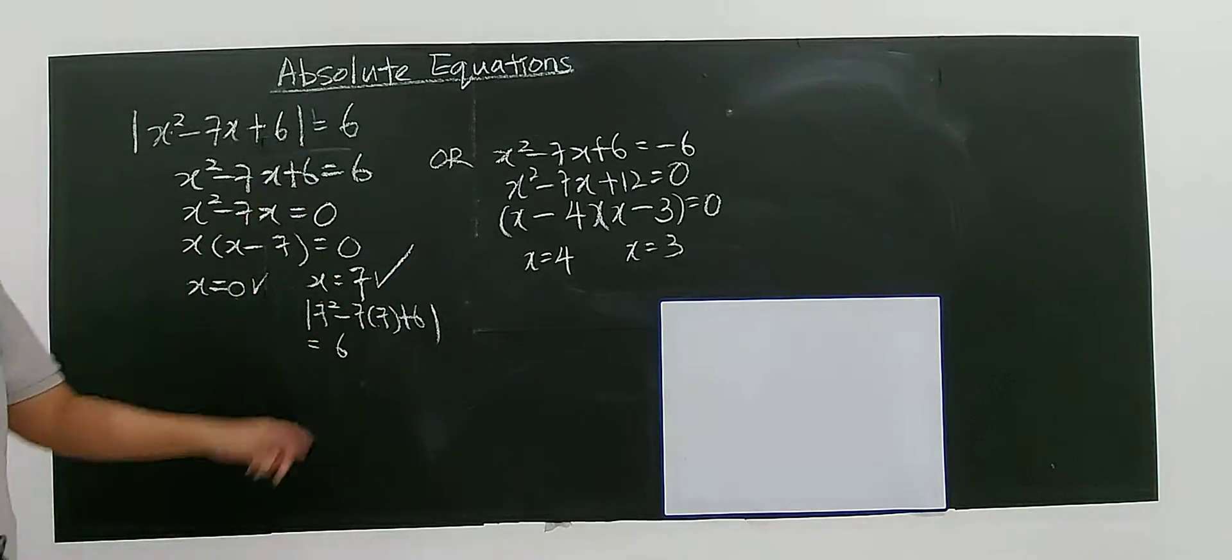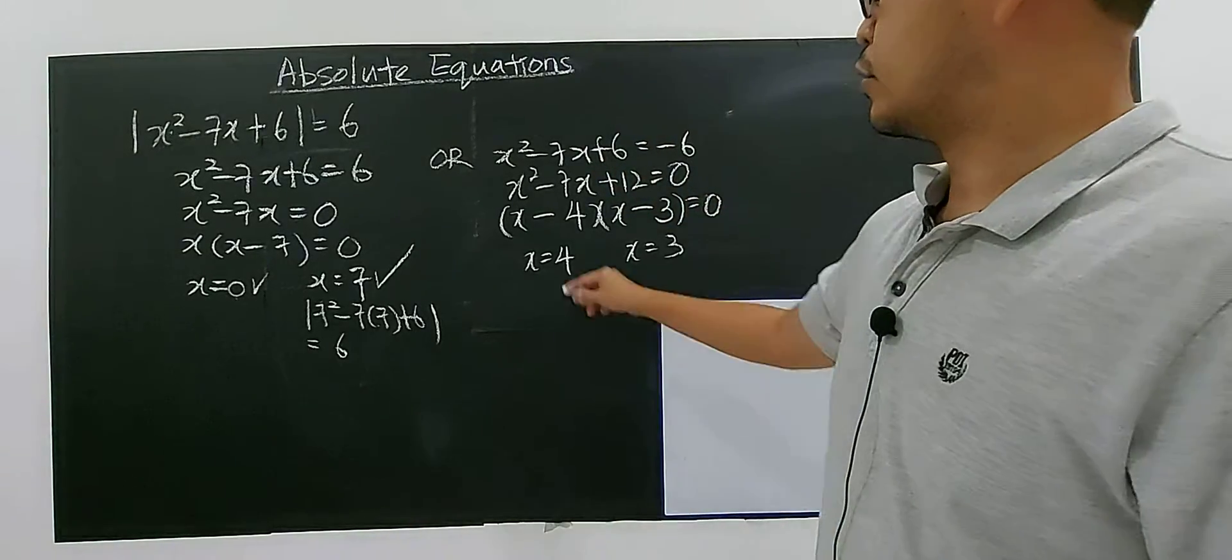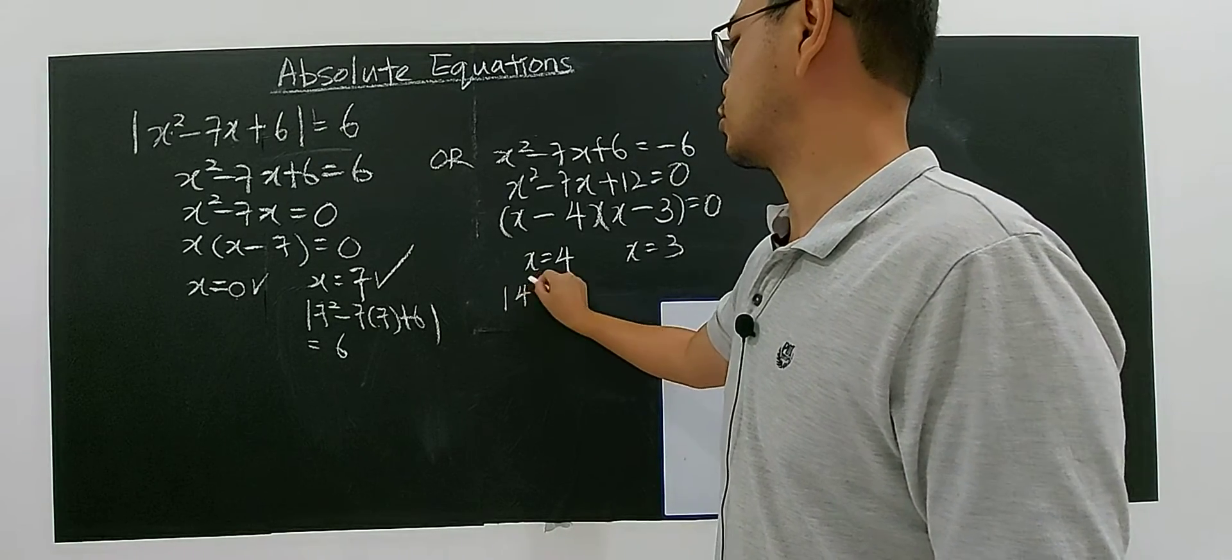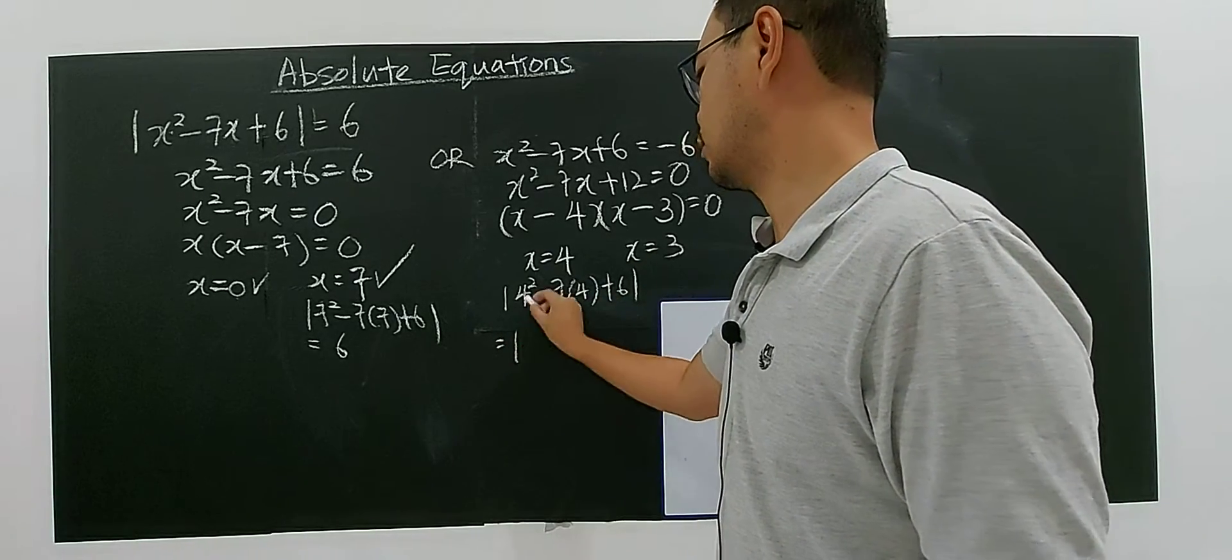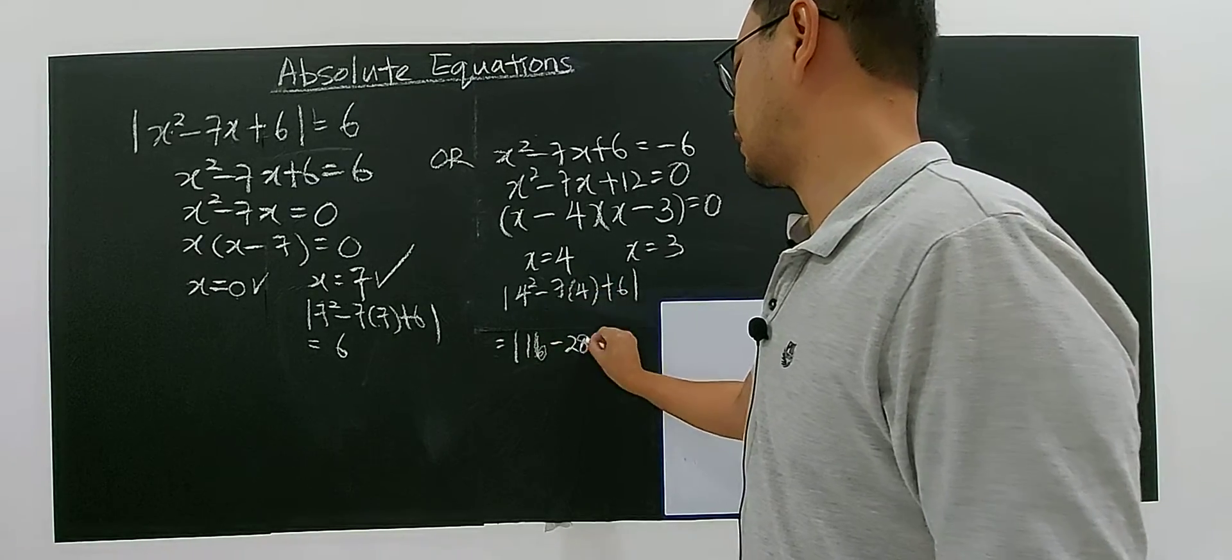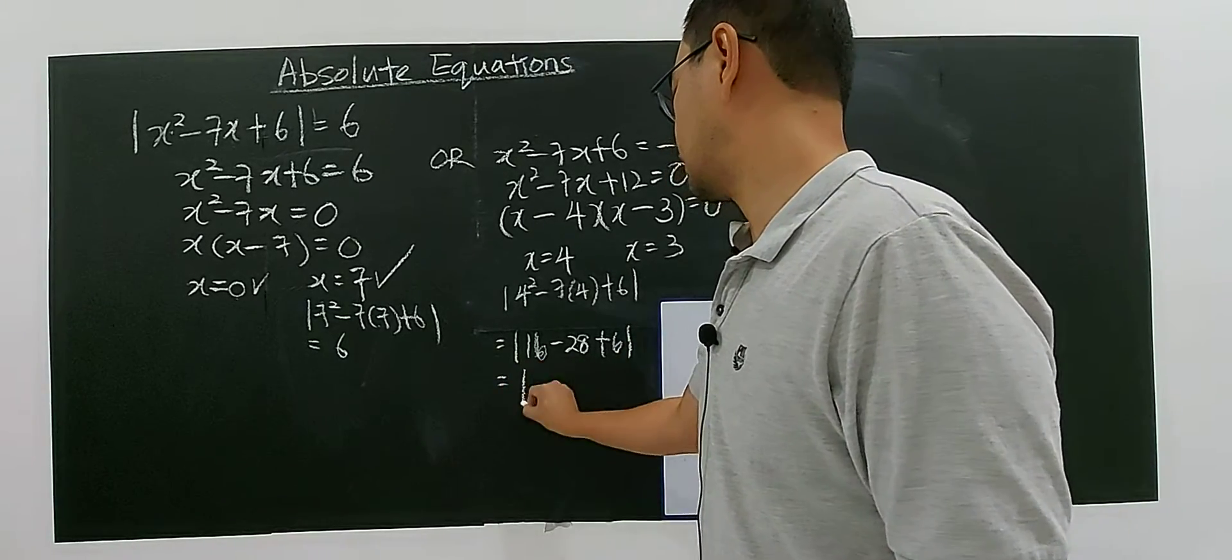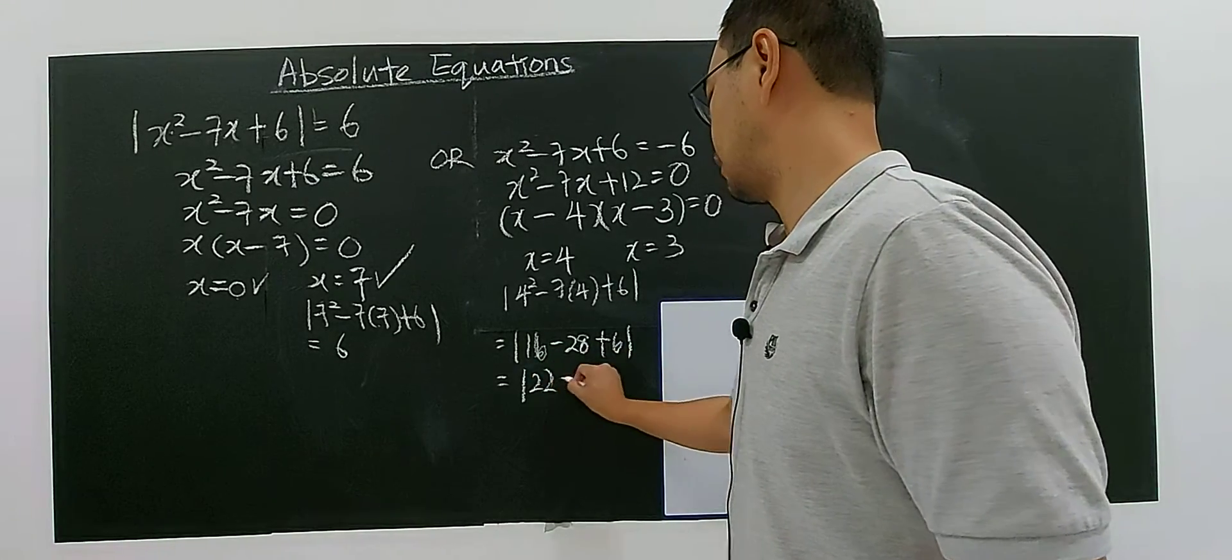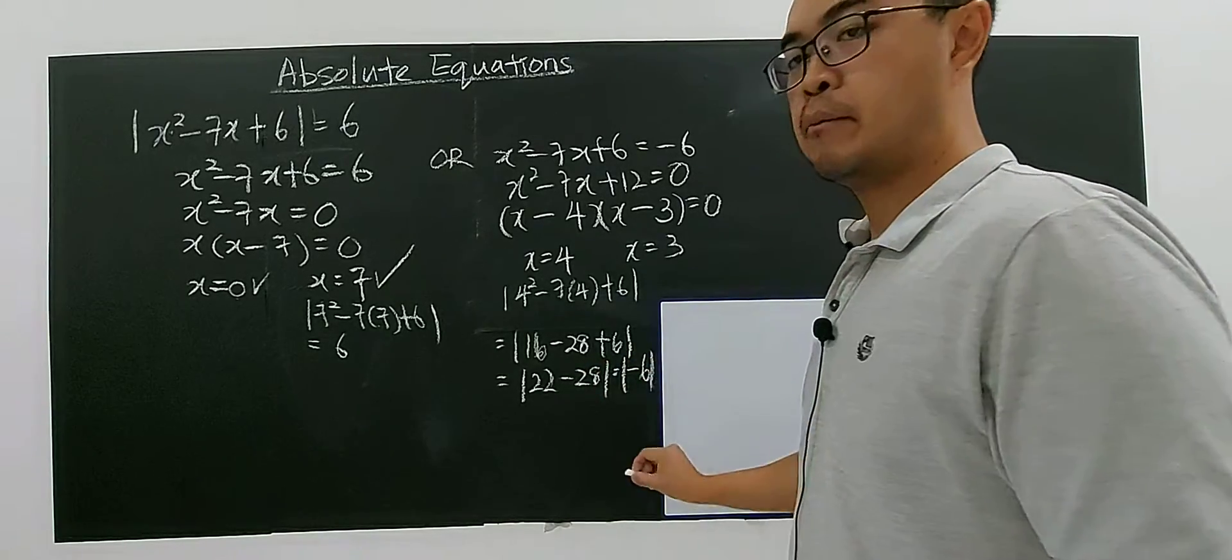Four. We can do mental arithmetic. 4² - 7(4) + 6. So it will be 16 minus 28 plus 6. 16 plus 6 gives you 22 minus 28. Inside you get negative 6. But modulus of negative 6 gives you 6.